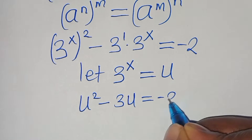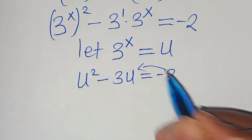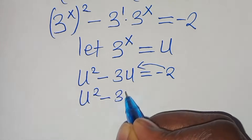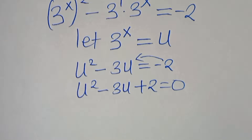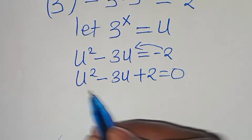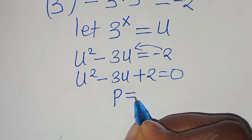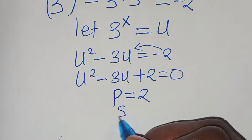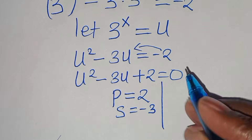This equals minus 2. Taking minus 2 to the left-hand side, we have u squared minus 3u plus 2 equals 0. This is a quadratic equation we can solve by factorization, where the product equals 2 and the sum equals minus 3. Let's identify two factors.